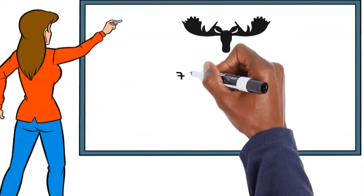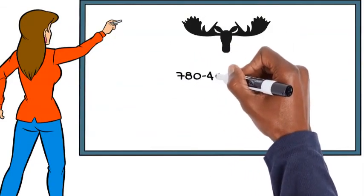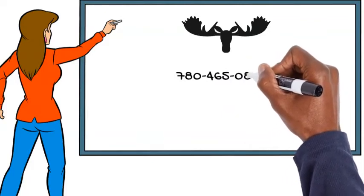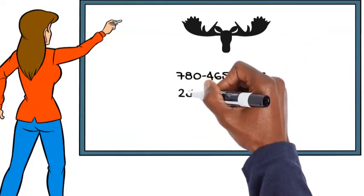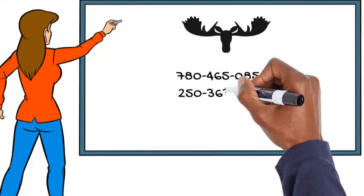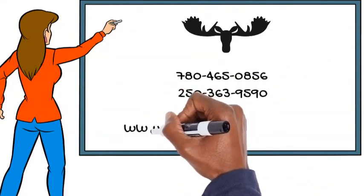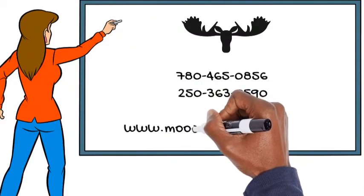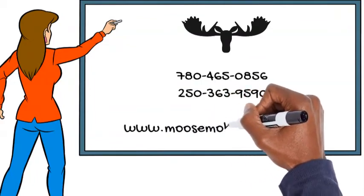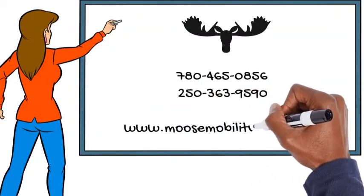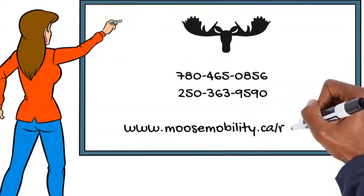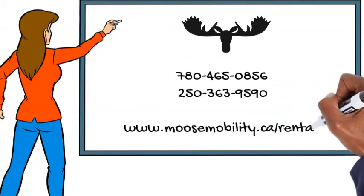If you'd like to rent a unit or need more information, give us a call at 780-465-0856 for our Edmonton location or 250-363-9590 for our Victoria location, or visit our website at www.moosemobility.ca. Thank you!